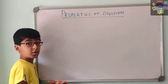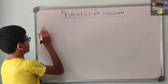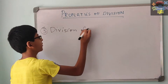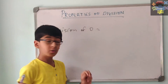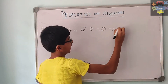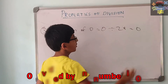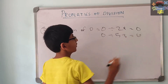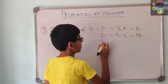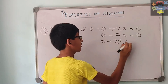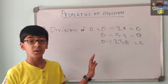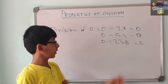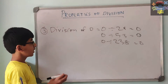Now let us learn the third property: division of 0, meaning 0 divided by any number. 0 divided by 24 is 0. 0 divided by 53 will also give us 0. 0 divided by 238 will also give us 0. Because if there are 0 items, it does not matter how many groups there are — we are just going to get 0 in each group.